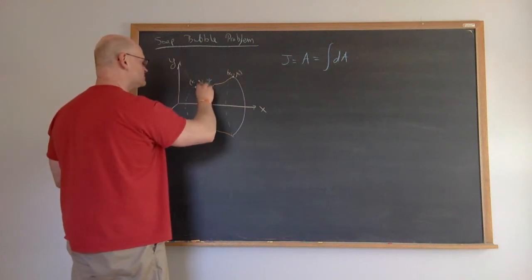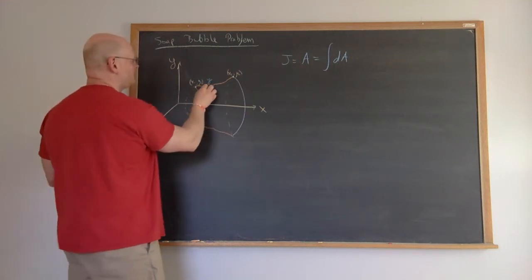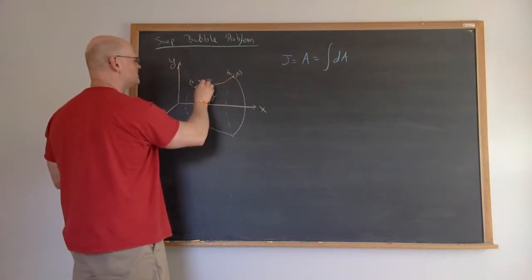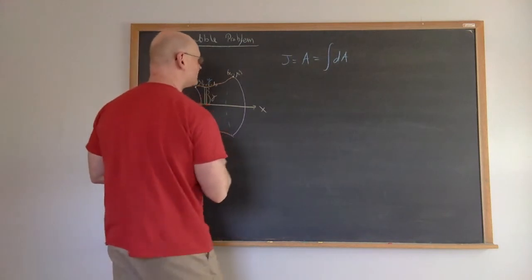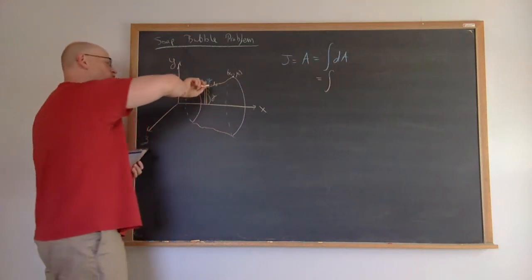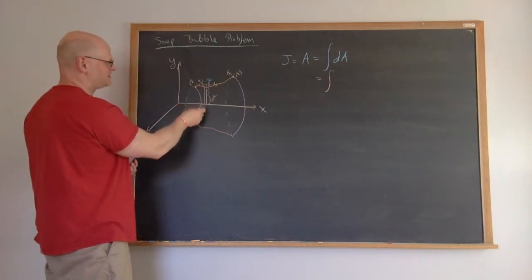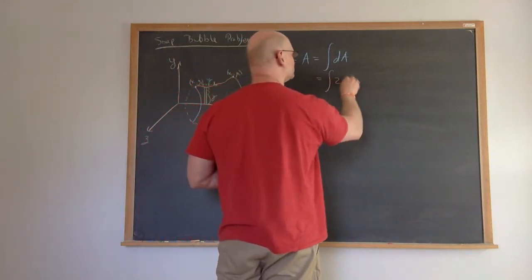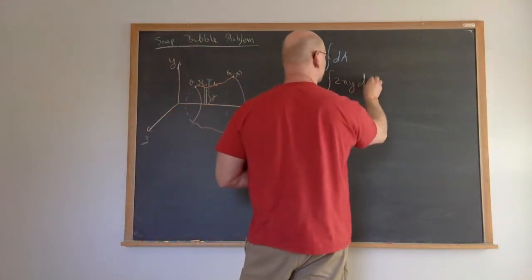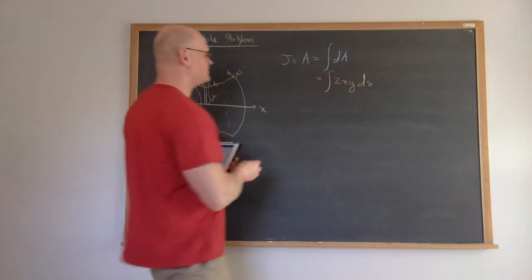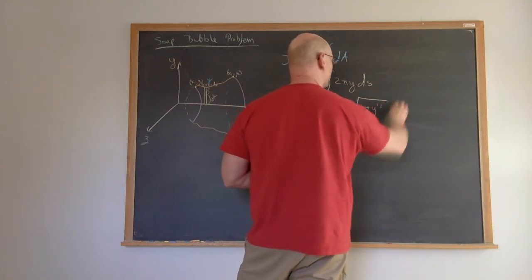Looking at a point with height y, we integrate from x to x plus dx along the curve. The differential area is created by wrapping around to form a disk — a circle whose circumference, since we're looking at surface area, is 2π times the radius y. So the differential area is 2πy times ds, the arc length element. Since ds equals √(1 + y'²) dx, we get 2πy√(1 + y'²) dx.